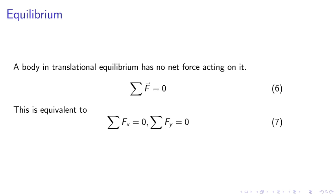Equilibrium. A body in translational equilibrium has no net force acting on it. Sigma F equals zero. This is equivalent to sigma Fx equals zero, sigma Fy equals zero, sigma Fz equals zero.